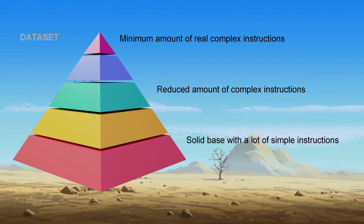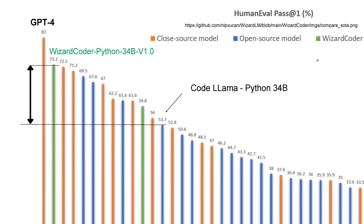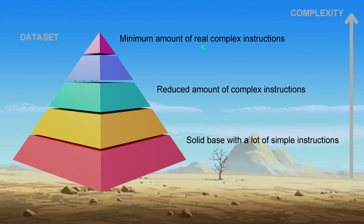This is the core problem. The more complexity of our task increases, the less training data our LLM has. So as you get closer to the top of the pyramid, more training data are missing from our traditional instruction fine-tuning dataset - we only have a minimum amount of really complex instructions for the LLM to learn from.